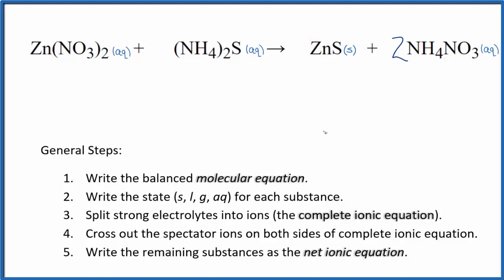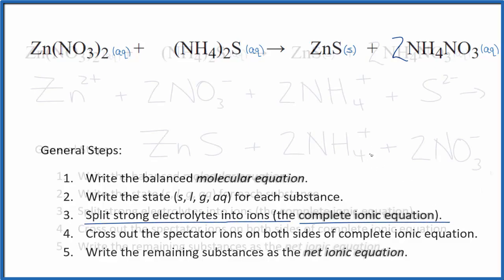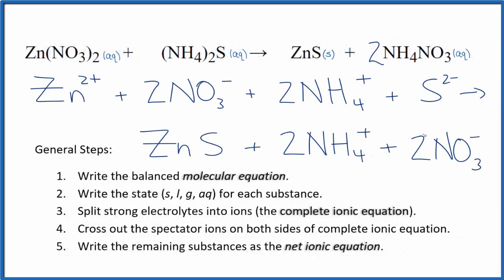So we have the states. Now we can split the strong electrolytes into their ions, and that'll give us the complete ionic equation. So this is the complete ionic equation. And you see that we did not split apart the zinc sulfide.